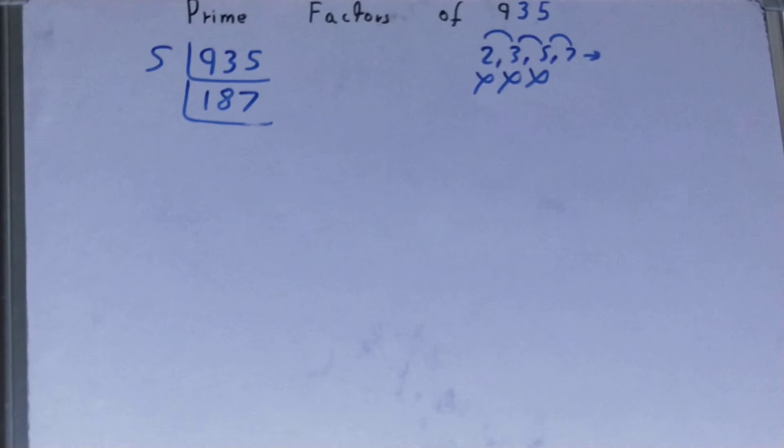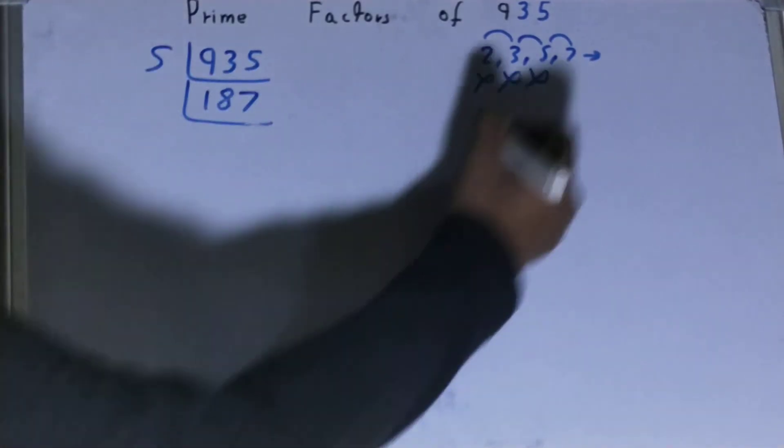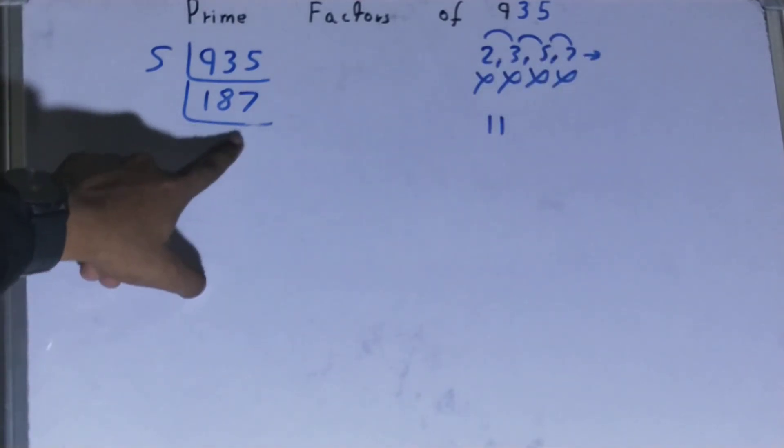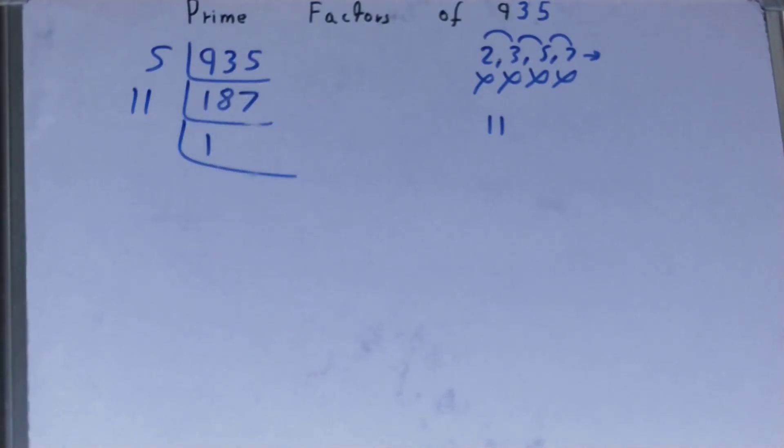So what we'll do is check it with the next lowest prime number, that is 7. 7 times 2 is 14, 4, 7. Not divisible with 7. Let's check it with 11. 11 times 1 is 11, 7, 7. Yes, with 11 it is divisible.